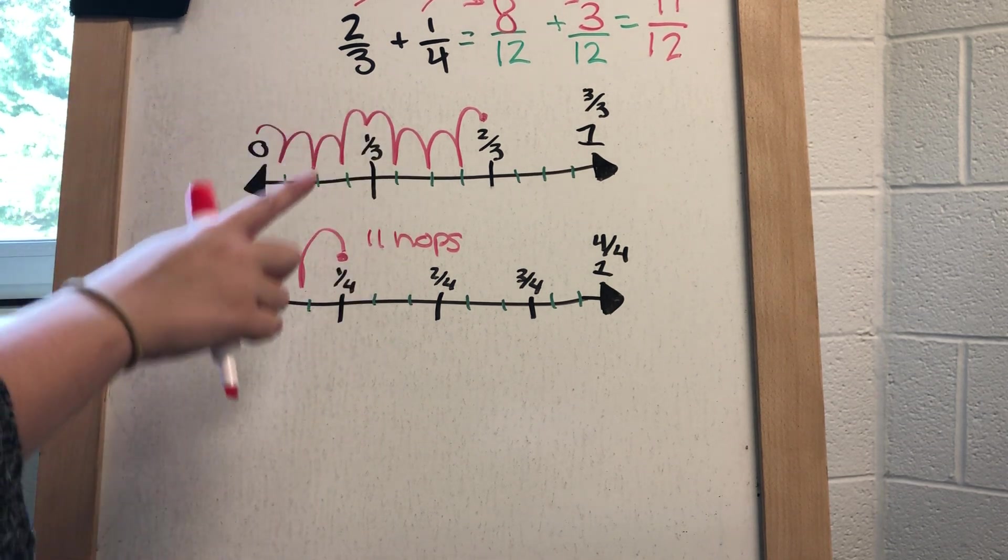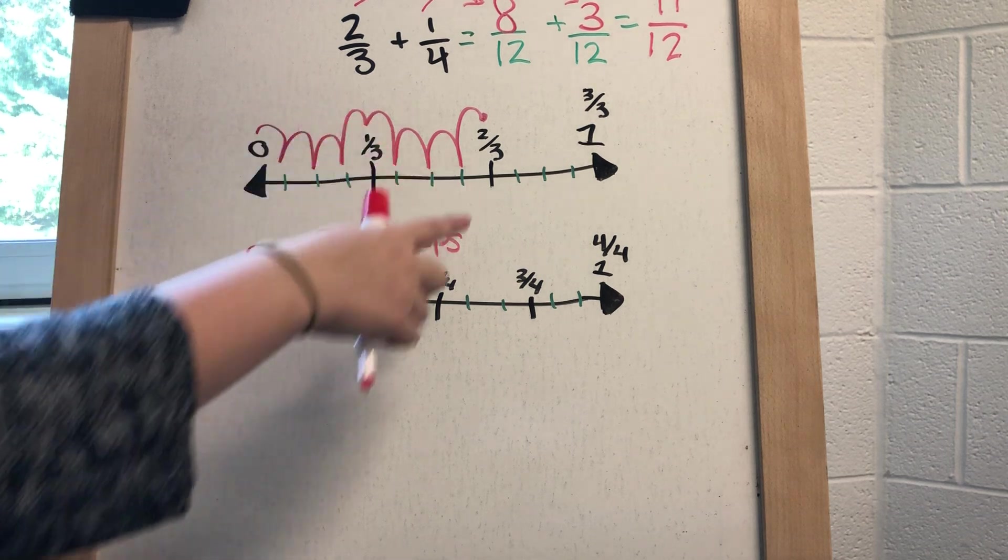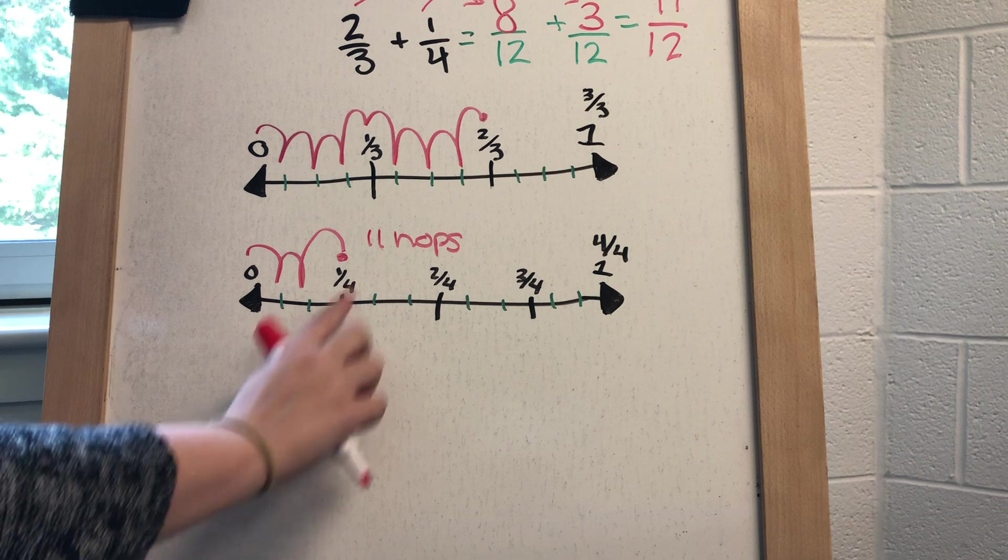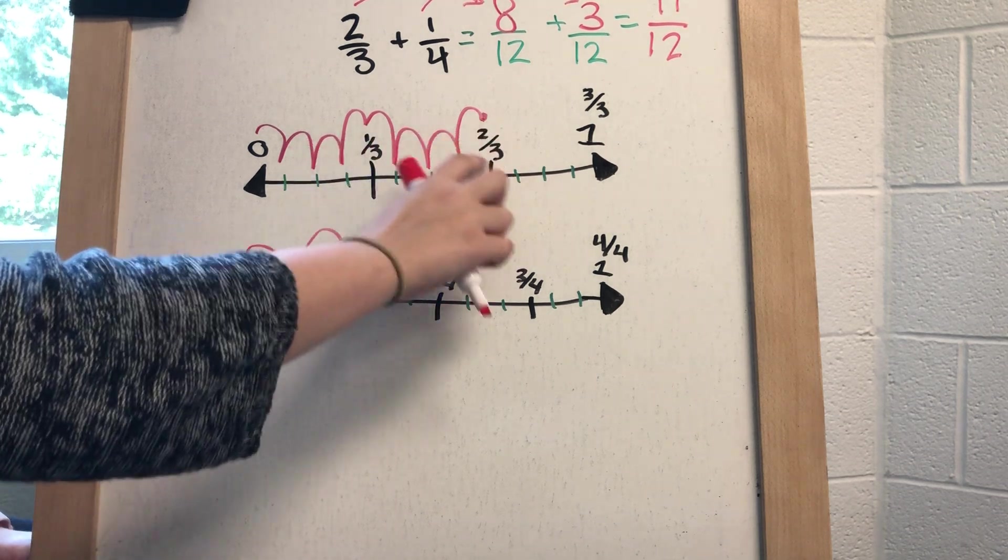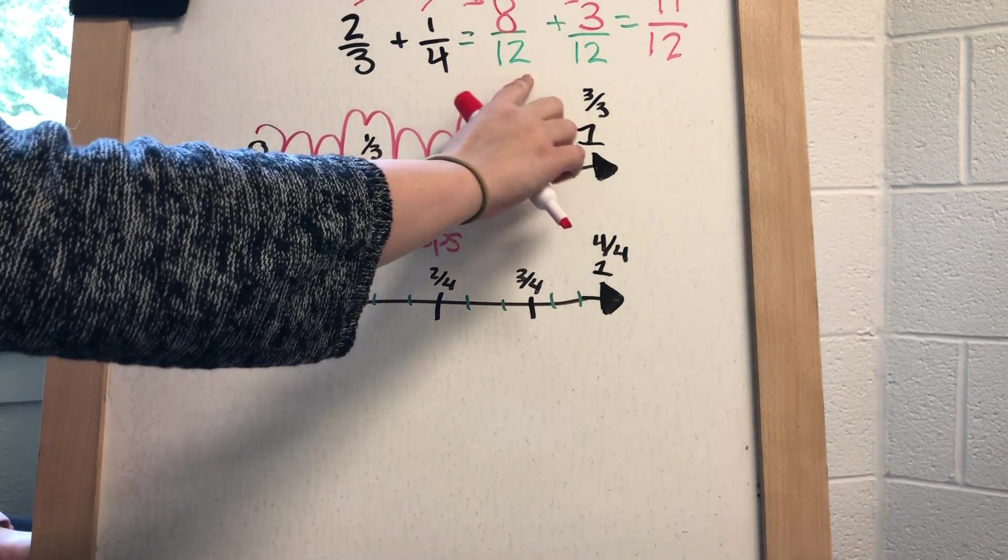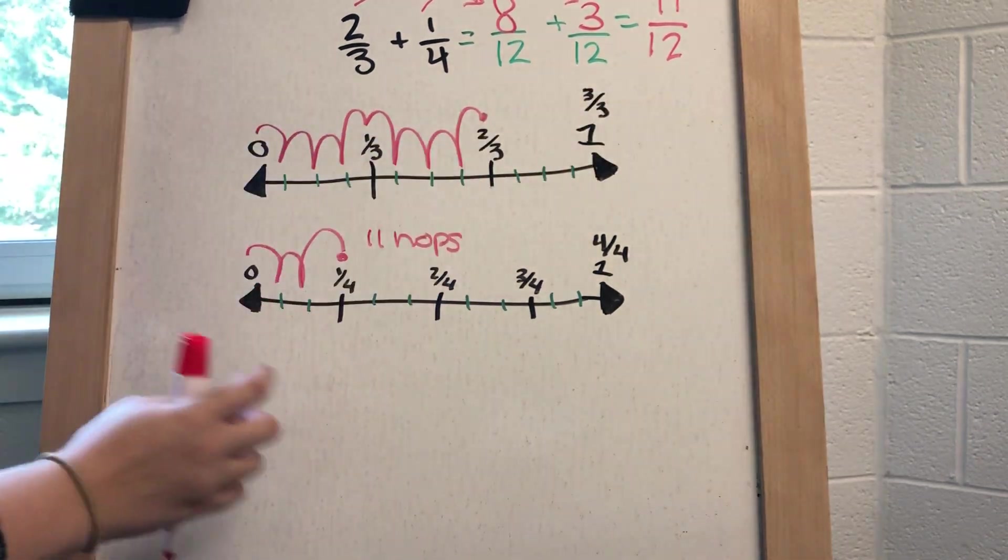This is going to help students visualize the fractions and really understand why you cannot add two-thirds plus one-fourth the way it is written already. You have to change to have a common denominator.